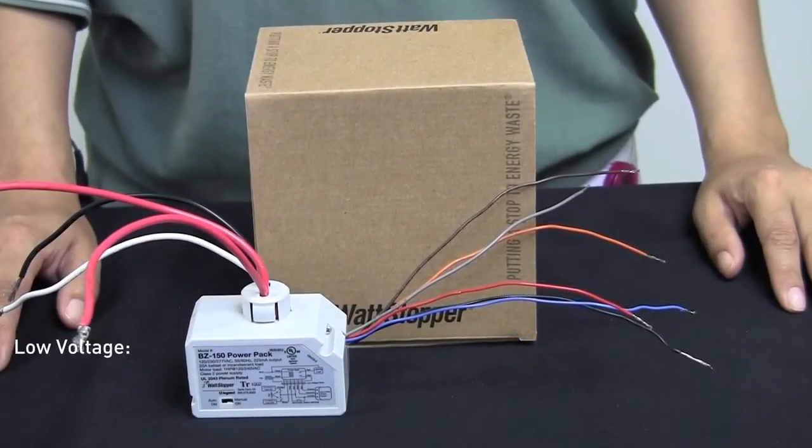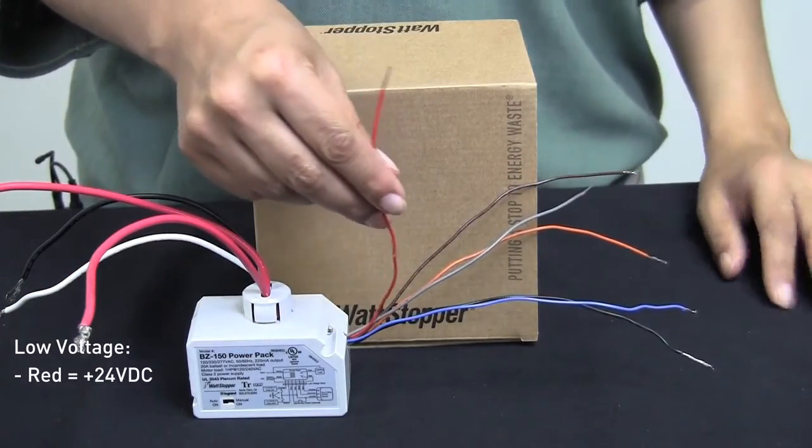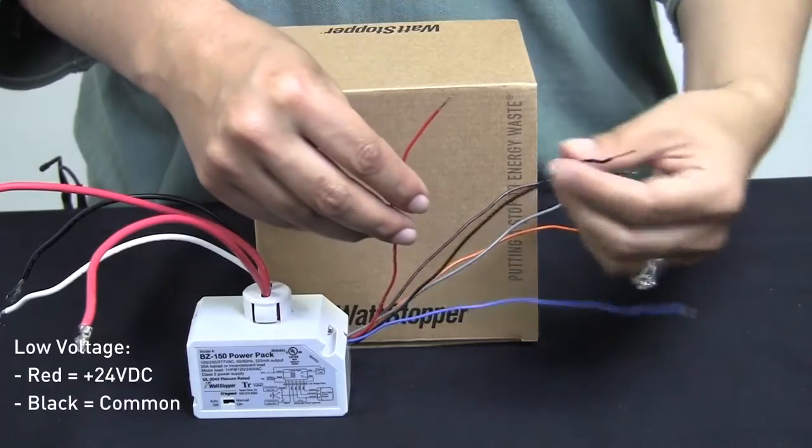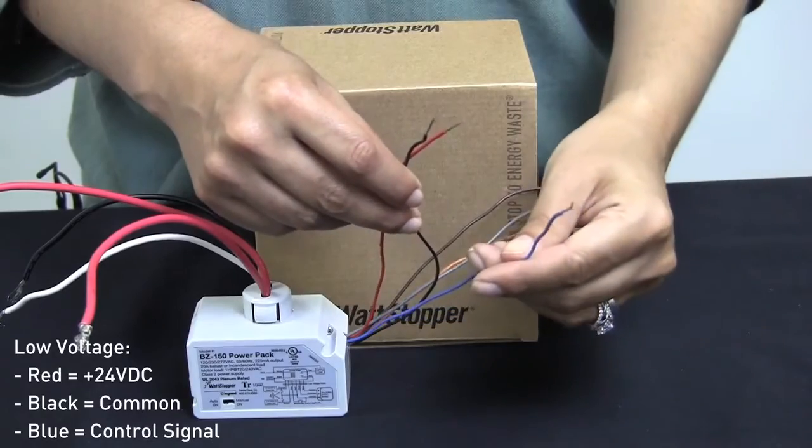The low voltage connections on the BZ150 consist of a red wire which is your 24 volts DC, black wire which is your common, and the blue wire which is your control signal.